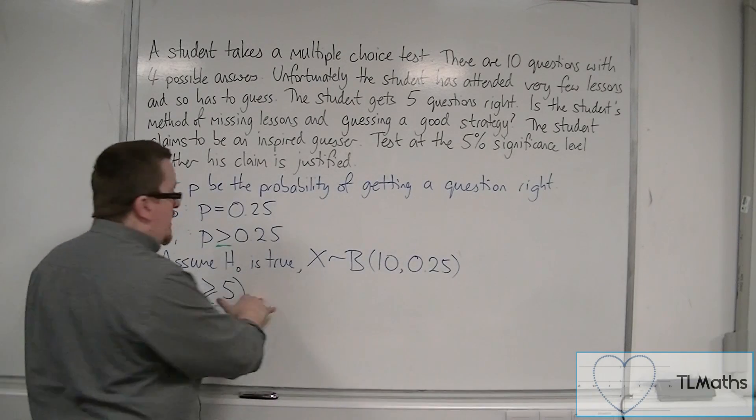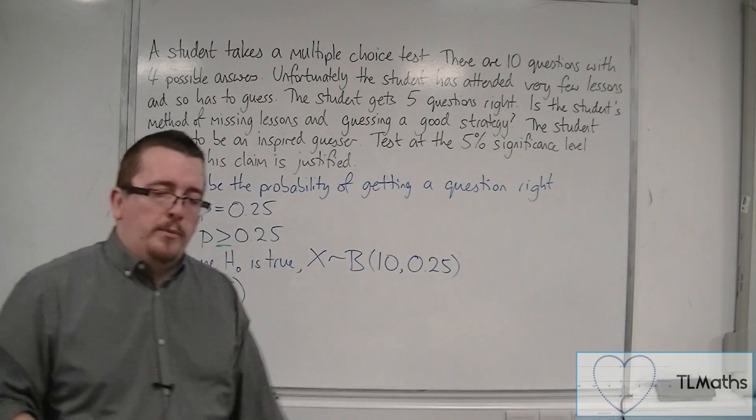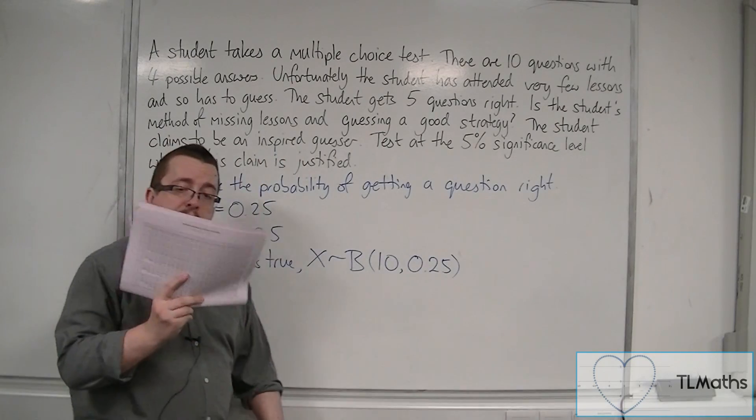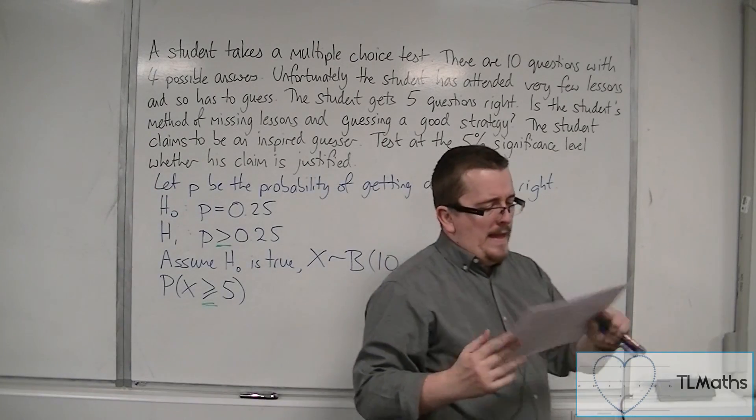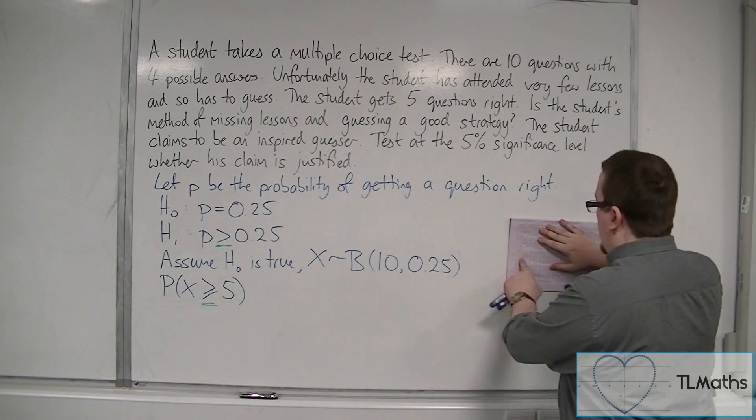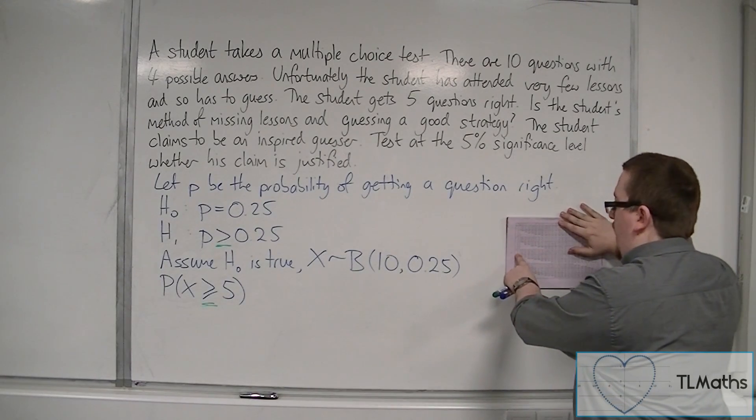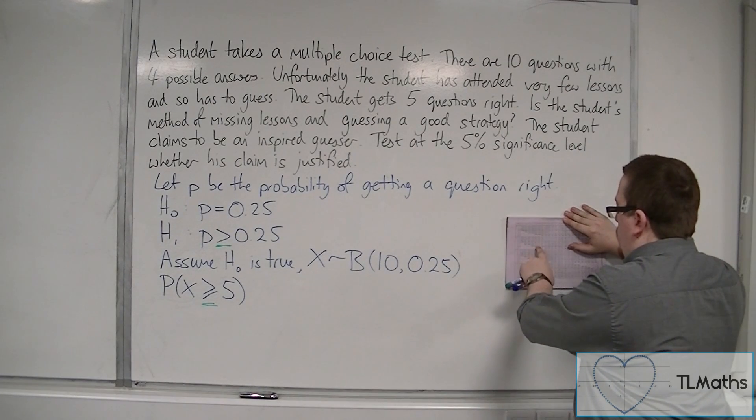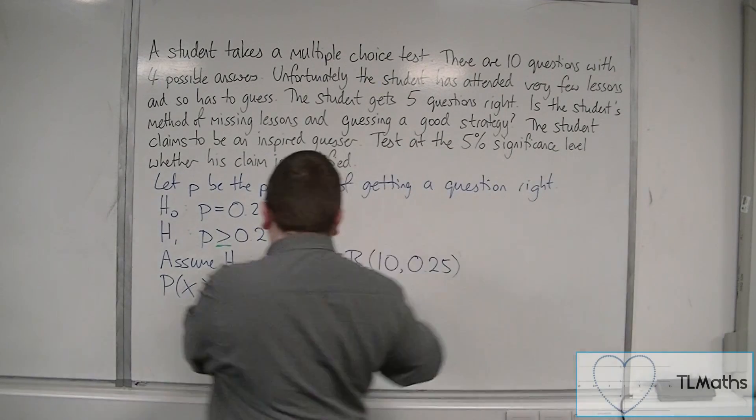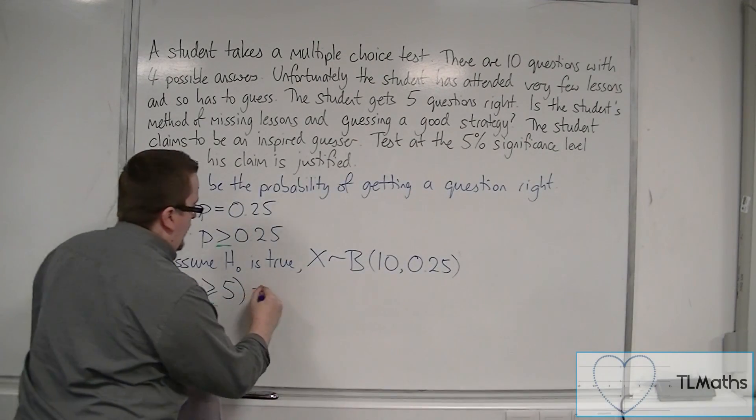So we need to work out that probability, so we've got to go to the tables. Get your formula tables at the ready. We are going to N is 10. This is on page 13. So N is 10 and probability of 0.25, and we want greater than or equal to 5. So just before I do that, that's one takeaway,